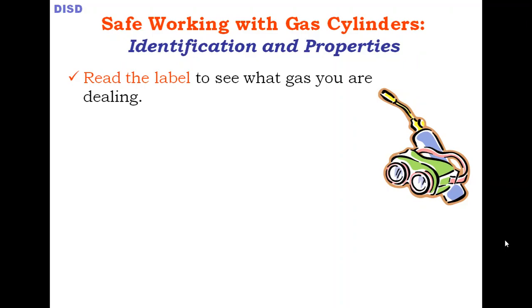No compressed gas cylinder should be accepted for use if it does not legally identify its contents by name. So if a cylinder label is missing or not proper, do not use it. If the contents are unknown, clearly tag the cylinder with 'contents unknown' and do not use it.